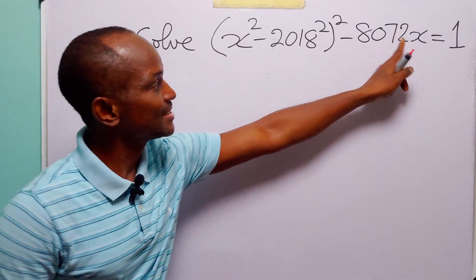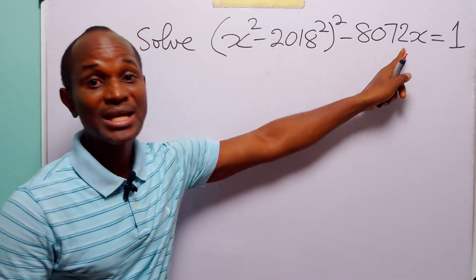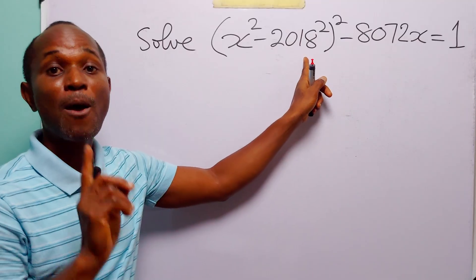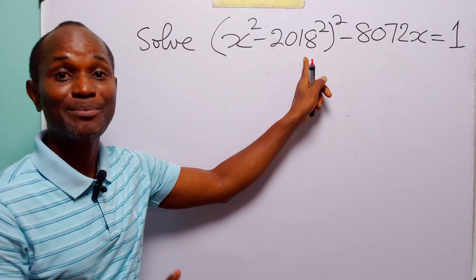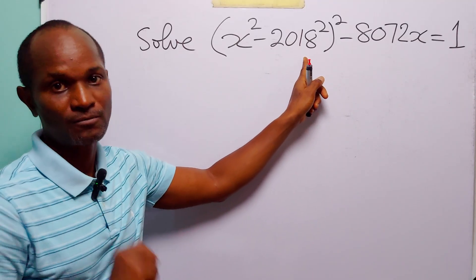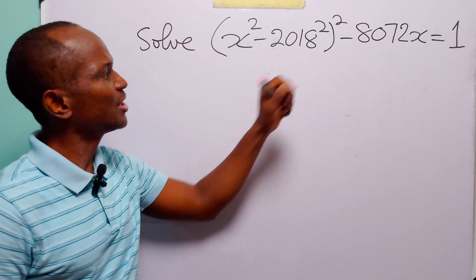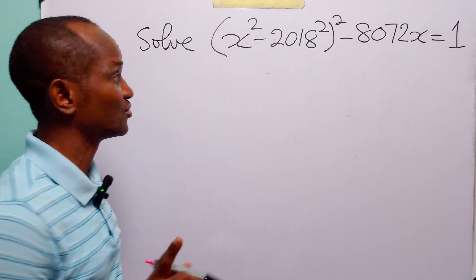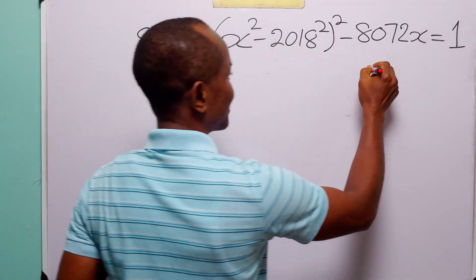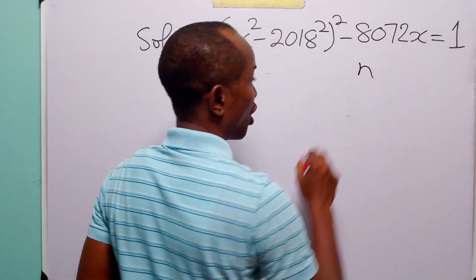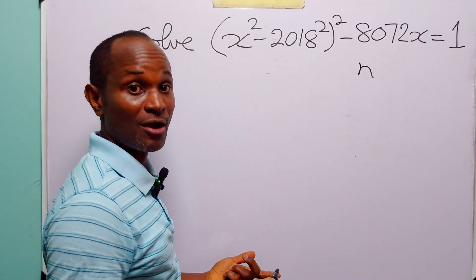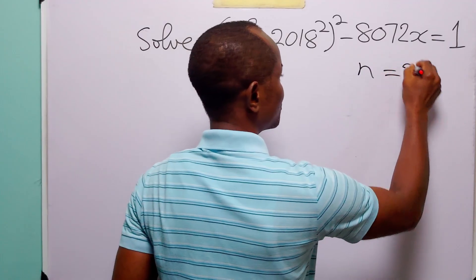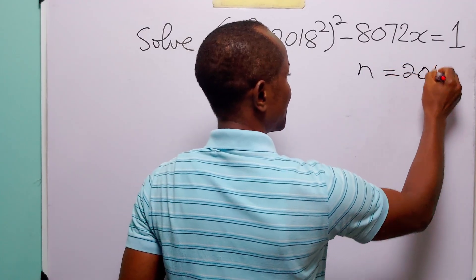The most important observation you'll make is that 872 is equal to 2018 multiplied by 4. When you make this observation, the next thing you are going to do is let n, or any letter of your liking, equal 2018.